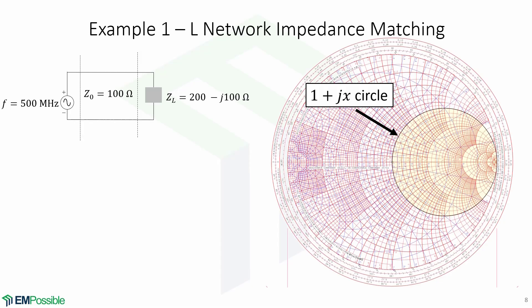Now we're going to take a look at an example. Suppose that we have a transmission line with impedance of 100 ohms connected to a load of 200 − j100 ohms, also connected to a generator with a frequency of 500 megahertz, and we wish to create a matching network. On our right we have the Smith chart with the 1 + jx circle highlighted for convenience.